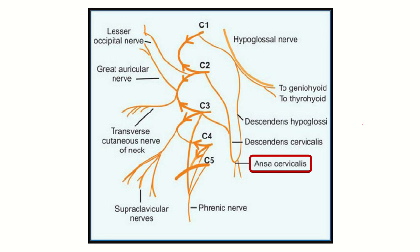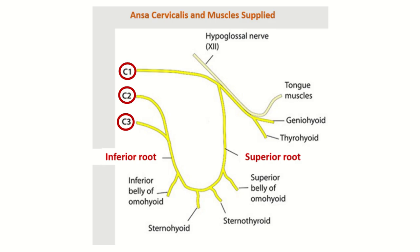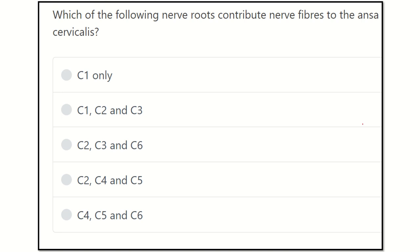Hi everyone, welcome to another question and answer session for the MRC section. The question is: which of the following nerve groups contribute nerve fibers to the ansa cervicalis? This is a direct, short question where we have to find the nerve fiber origin. The options are: cervical one only; cervical one, two, and three; cervical two, three, and six; or cervical two, four, and five.